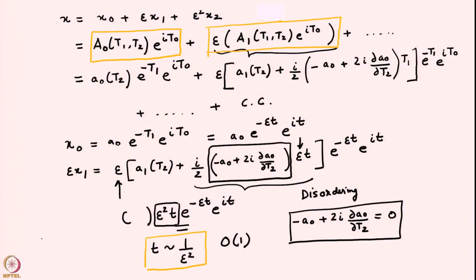We were looking at the damped harmonic oscillator using the method of multiple scales. We had expanded up to some order and found that at various orders one has to eliminate the resonant forcing terms. In particular, at order epsilon, the coefficient of the boxed term is something which will get disordered — it becomes as large as the first term in the expansion at times of order 1/ε². To prevent that, we set the term in the rectangular box to zero.